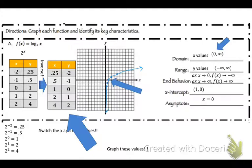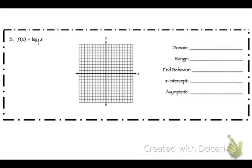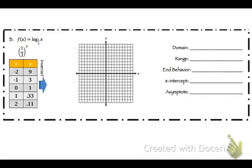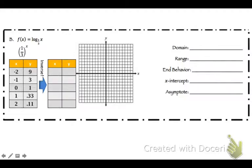Now let's look at log base 1/3 of x. We're going to use 1/3 to the x power, with x values negative 2, negative 1, 0, 1, and 2. So: 1/3 to the negative 2 is 9, to the negative 1 is 3, to the 0 is 1, to the 1st is 0.33, and 1/3 squared is 0.11. But that's for 1/3 to the x — we have to invert that, switching x and y values: x becomes 9, 3, 1, 0.33, 0.11 and y becomes negative 2, negative 1, 0, 1, 2.